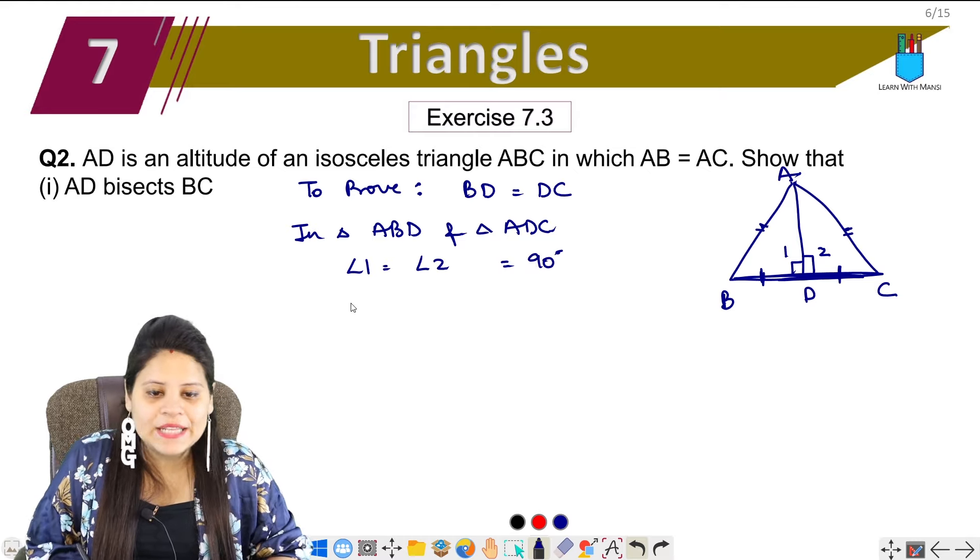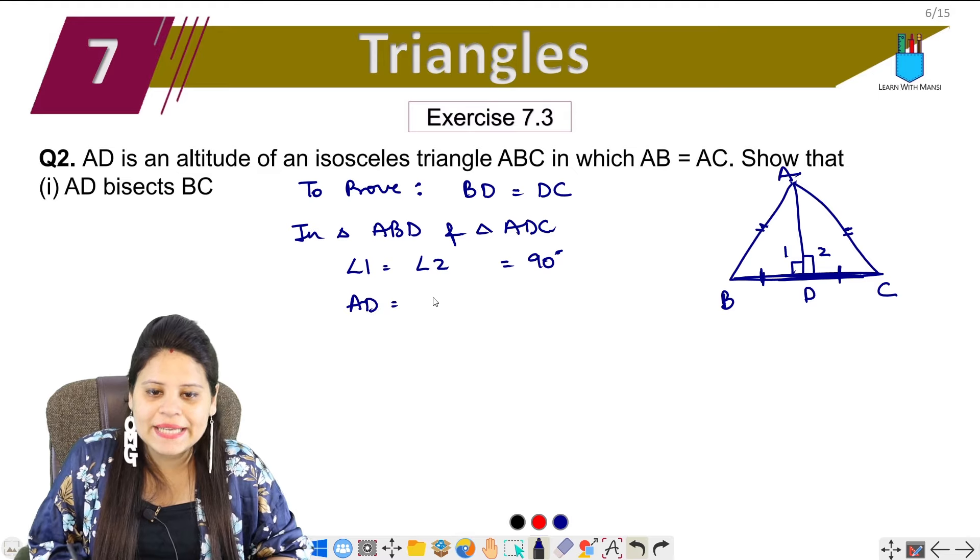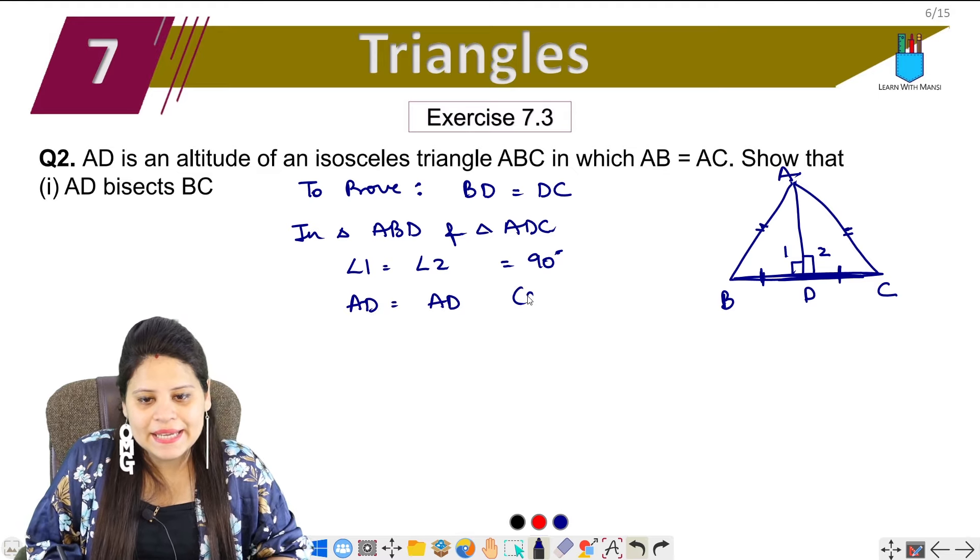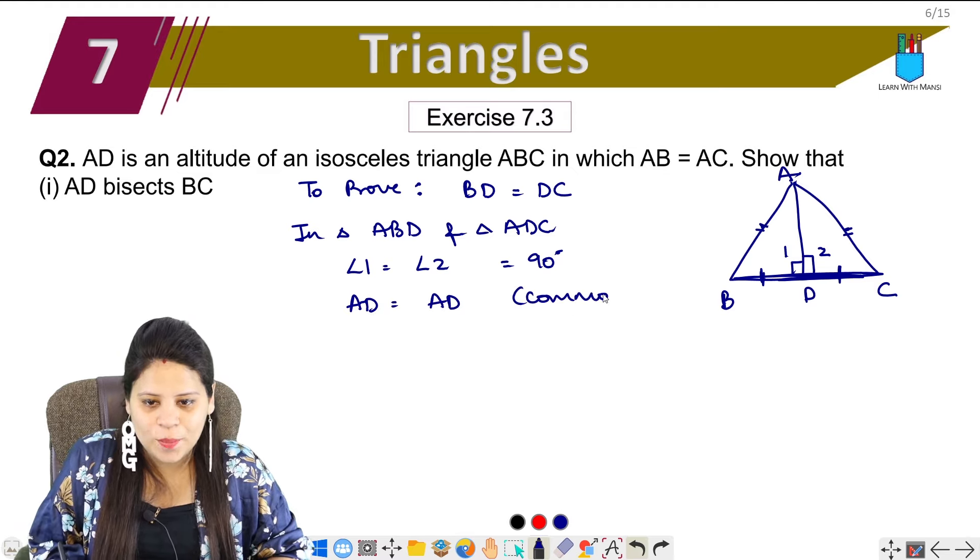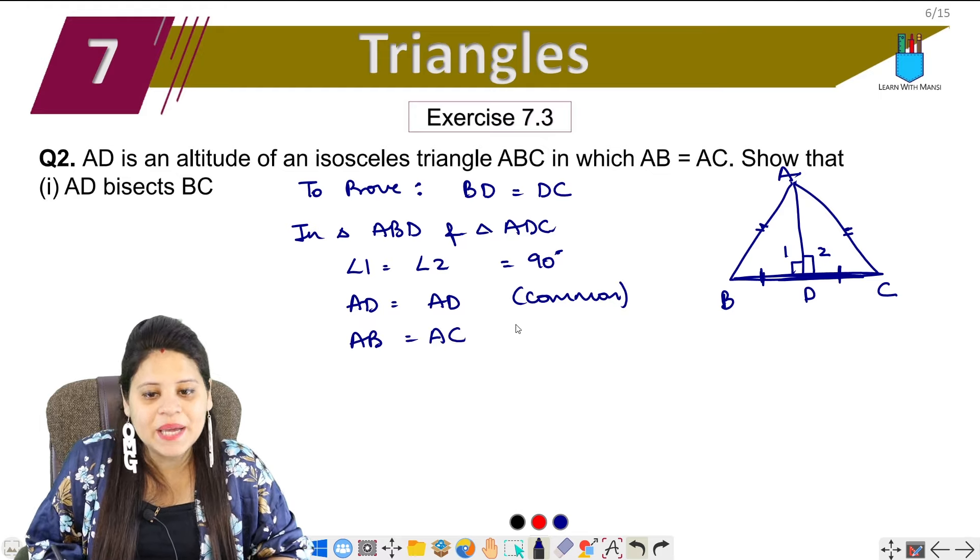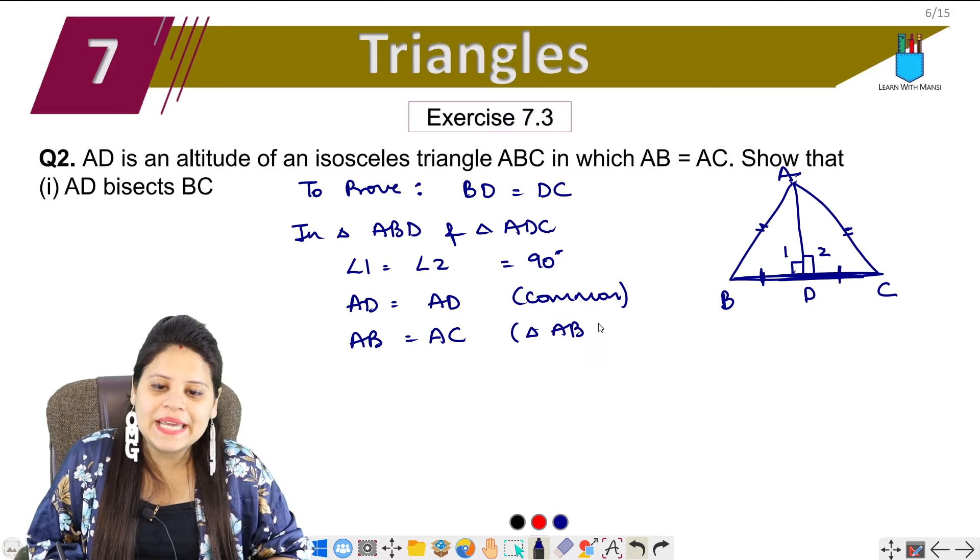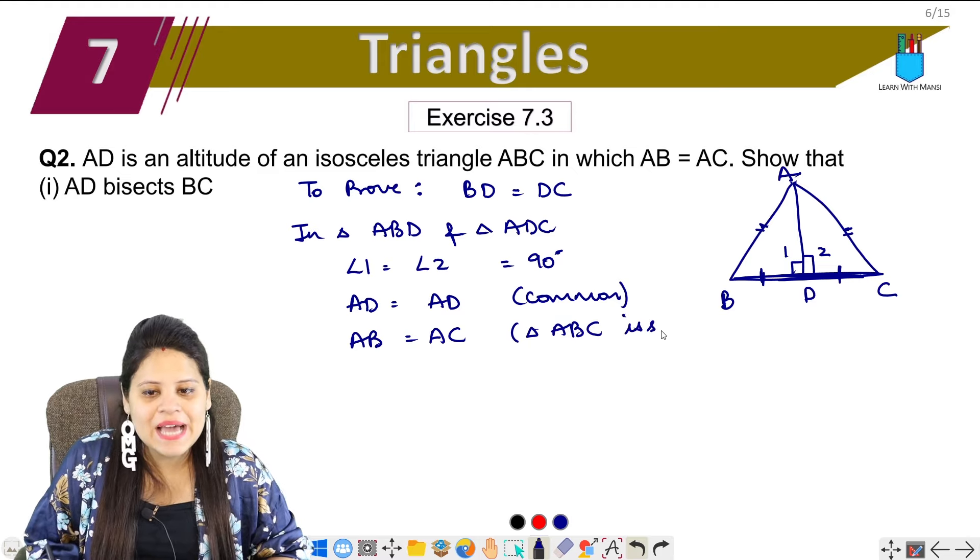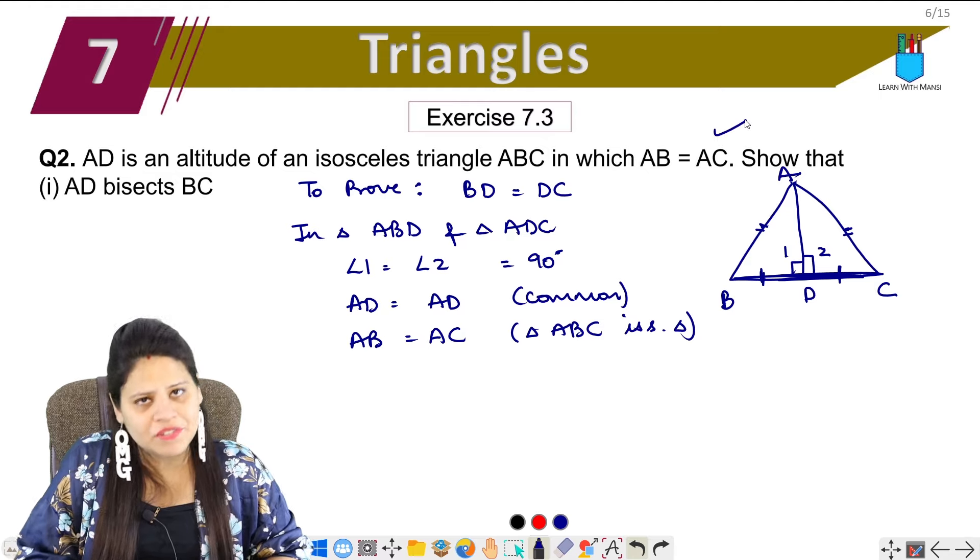Then AD is common. AD is equal to AD. This is common. And also AB is equal to AC because triangle ABC is an isosceles triangle. Also, this is given in the question.